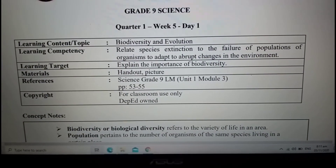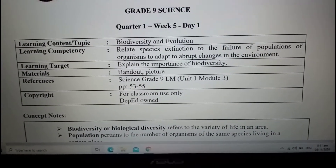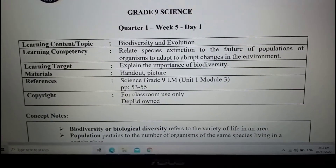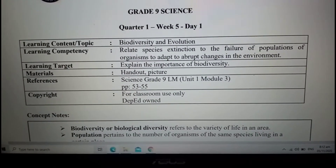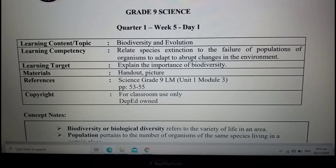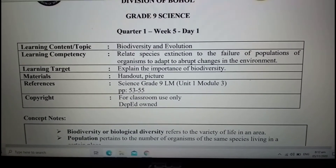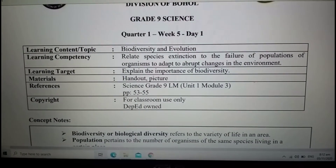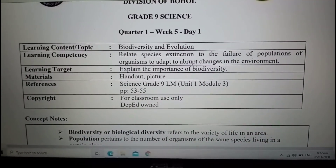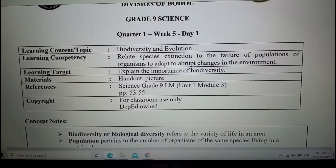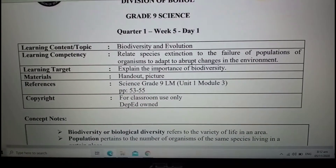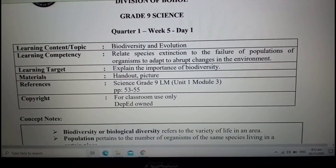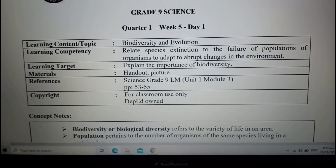Hi everyone, this is your activity for week 5, day 1, about biodiversity and evolution. The learning competency is to relate species extinction to the failure of a population of organisms to adapt to abrupt changes in the environment. At the end of this lesson, you will be able to explain the importance of biodiversity.